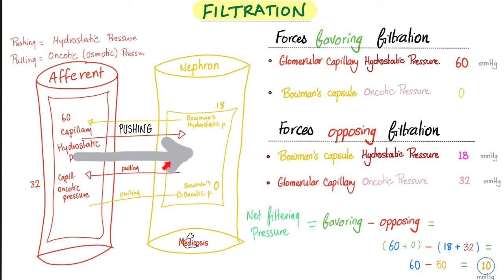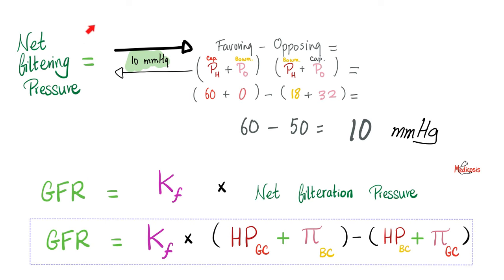How much are we moving, and by what pressure? By about 10 millimeters of mercury. This concept is very important because this number helps you calculate the glomerular filtration rate, which is an indicator of how good your kidney function is.